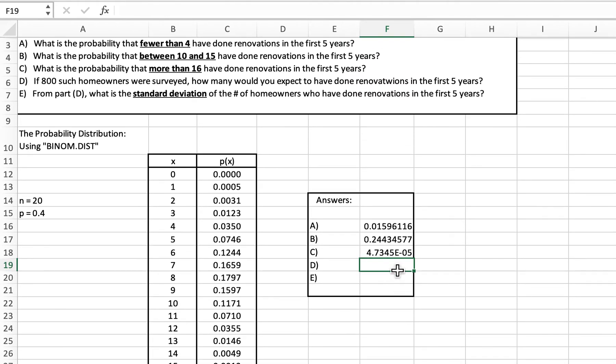Now for D, just looking at another aspect of this, if 800 such homeowners were surveyed, how many would you expect? Remember that the mean is n times p for a probability distribution. This is going to be equal to 800 times 0.4, which is 320.